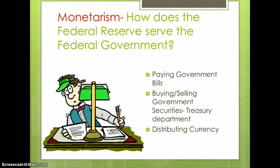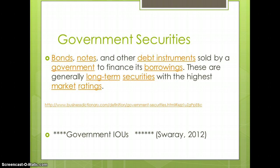Government securities are bank notes and other debt instruments sold by a government to finance its borrowing. These are long-term securities with the highest market ratings — kind of like government IOUs that help finance government debt. The government can sell part of itself; you can buy stock in the U.S. government and get interest back, around a 2.6% interest rate, which means your money will about hold its value with inflation. When we talk about the national debt, we are mostly in debt to ourselves, since it's Americans who have bought most of these. Yes, some are sold to China and Japan, but no country has more than about an 8-9% share.